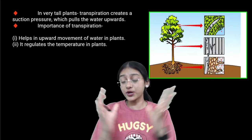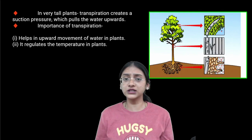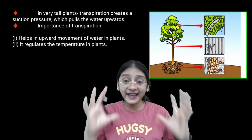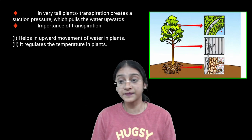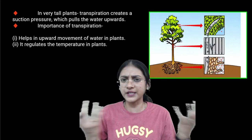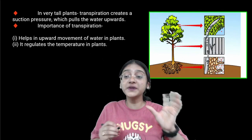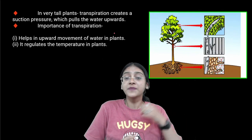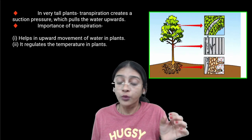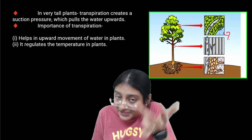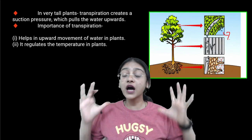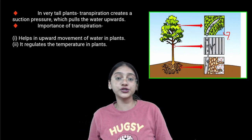Now we should understand about transpiration, which occurs in all plants — not just tall ones. Transpiration is the evaporation of water from the aerial or upper surfaces of plants and trees. Water goes out through pores on the leaves and some stems called stomata. Transpiration creates a suction pressure, pulling water upwards. Since water is lost through transpiration, pressure is created to draw more water and ions up from the soil.